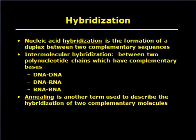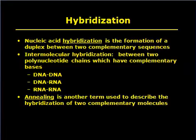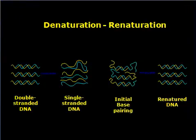Nucleic acid hybridization is the formation of a duplex between two complementary sequences. Intermolecular hybridization between two polynucleotide chains can occur as DNA to DNA, DNA to RNA, or RNA to RNA. Annealing is another term describing the hybridization of two complementary molecules. Denaturation is the removal of the original bonds, and renaturation means annealing — combining back into paired strands.